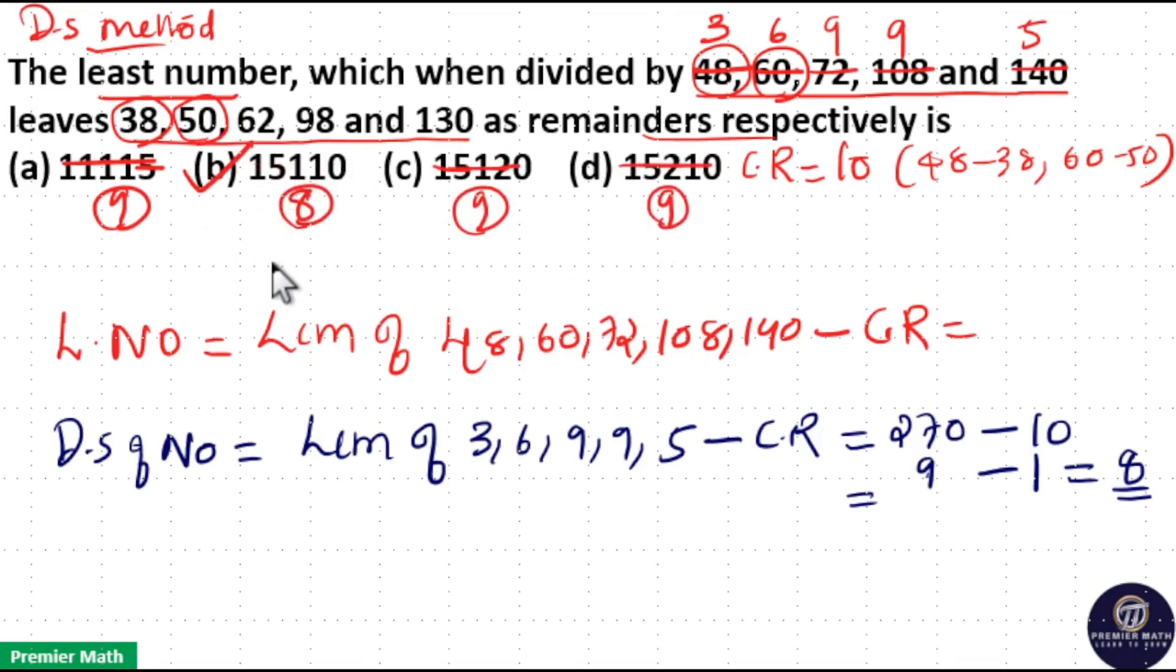That is your number, least number equals 15,110. So here LCM of these numbers must be 15,120. Then if you subtract 10 from it, you will get 15,110 as your number. So digital sum method is more easier.